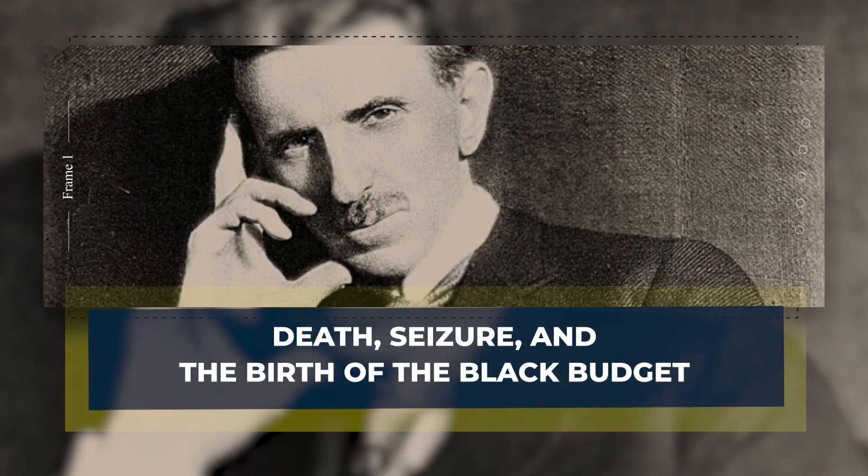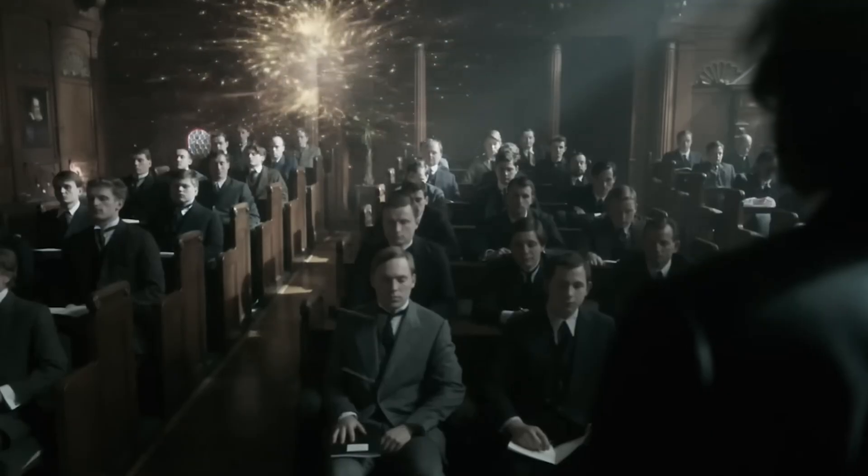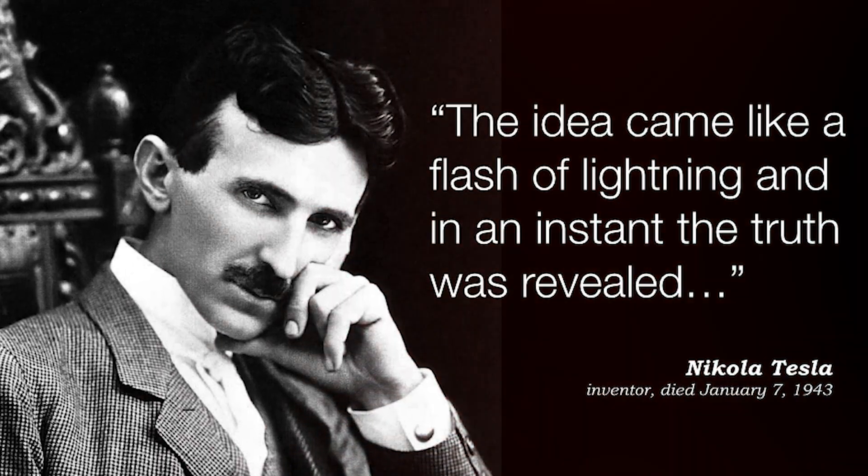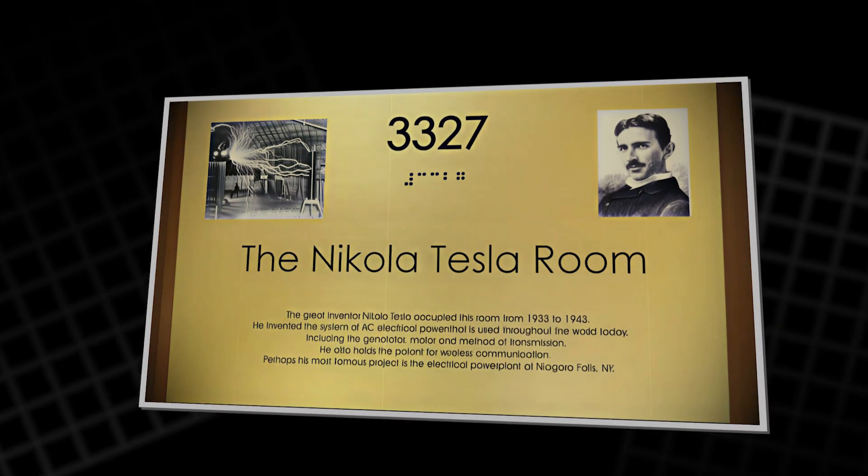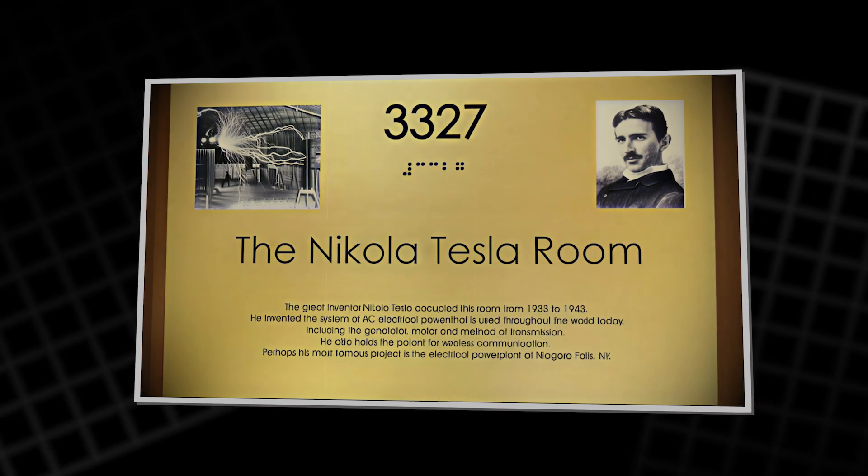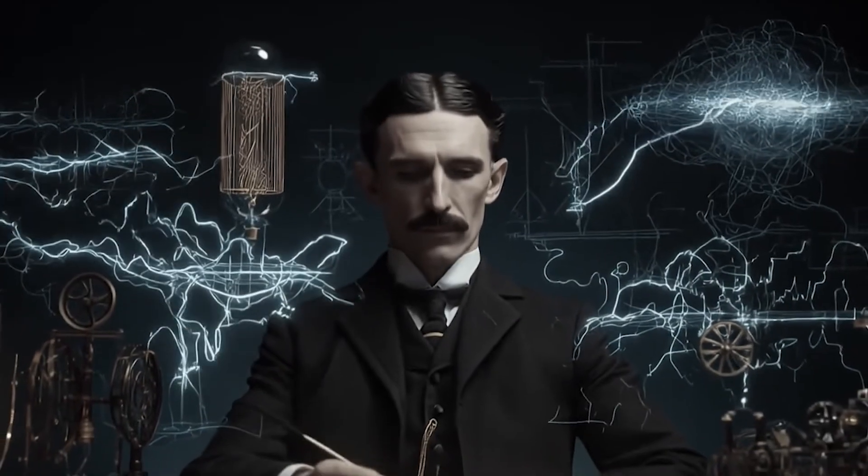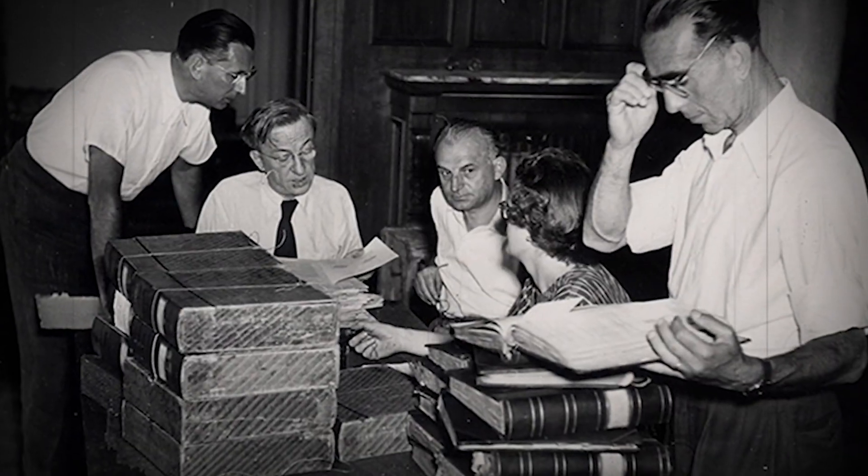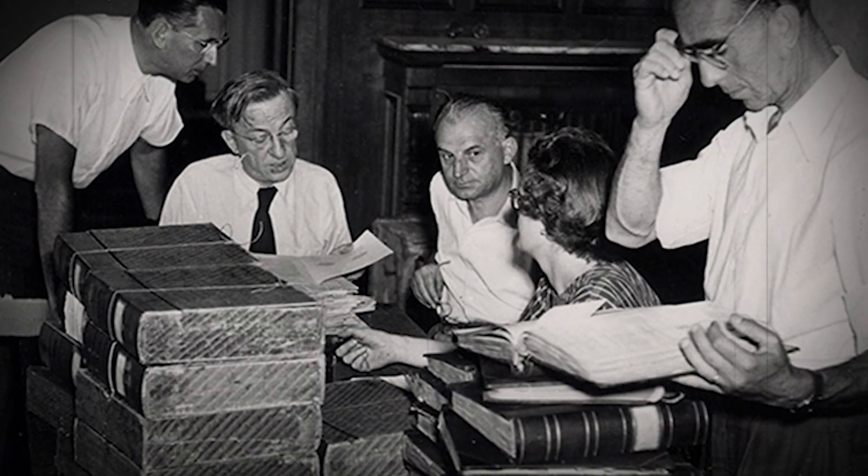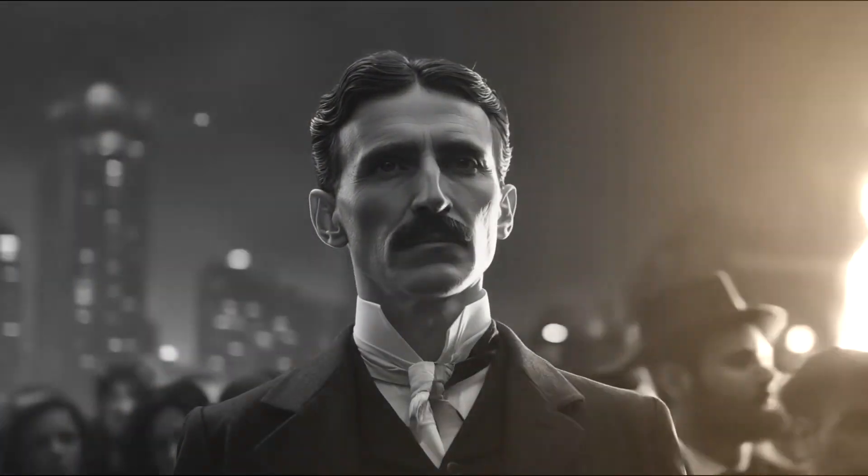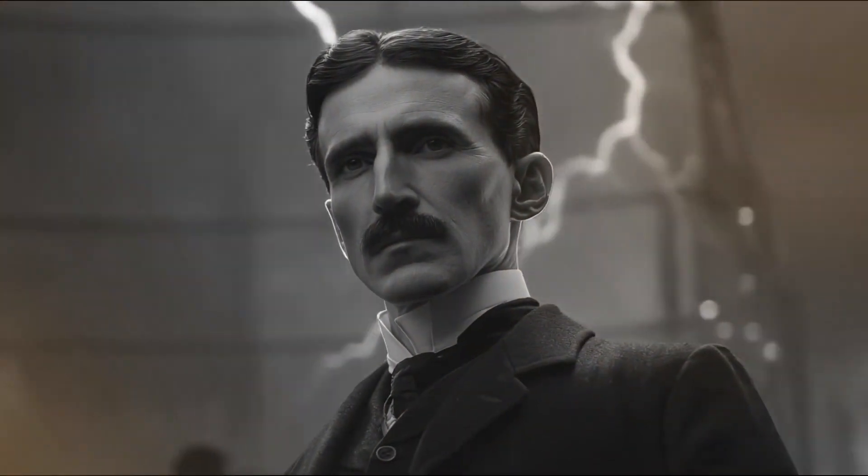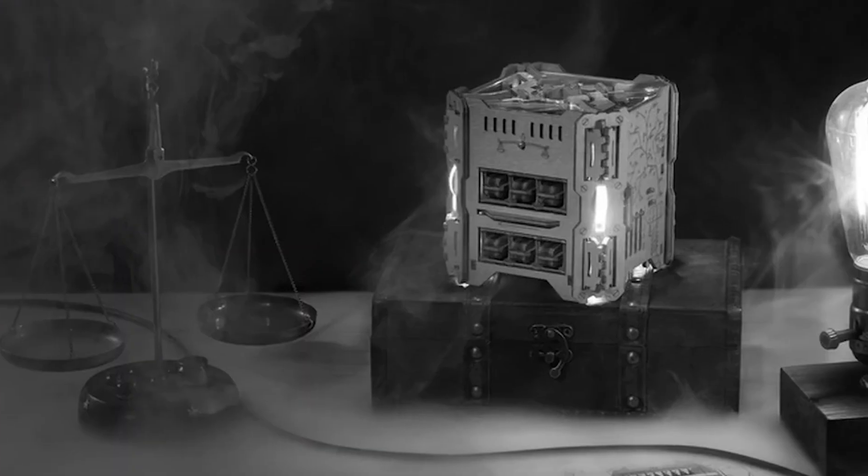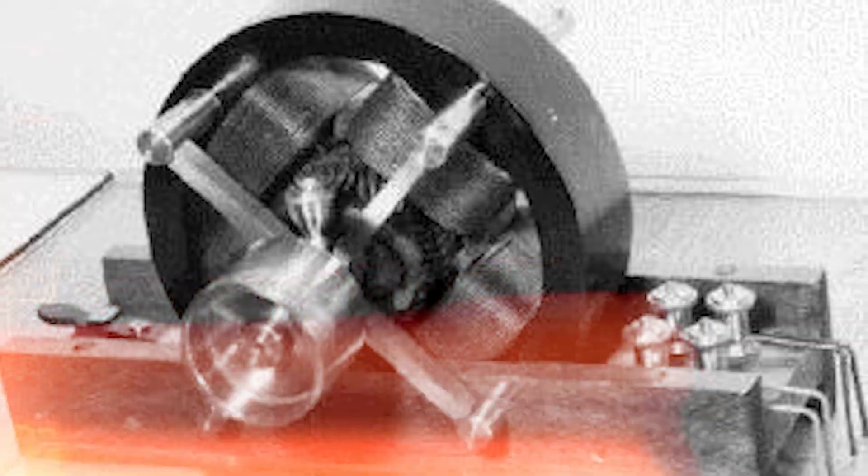Death, seizure, and the birth of the black budget. All this would be a curious theory if it stayed in the past. It does not. It faces the official record on January 7th, 1943. That day, Tesla died alone and broke into room 3,327 of the Hotel New Yorker. Within hours, his work was treated like contraband. Agents from the Office of Alien Property arrived, a wartime agency used to seize assets from enemies of the United States. Tesla was a citizen, but he had spent years promising a particle-beam teleforce weapon while World War II raged. The agents packed his world. Trunks, boxes, notes, sketches, odd machines, even his ashes. All of it vanished into government storage.